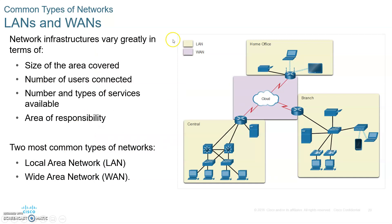A local area network (LAN) is where all the devices are connected to each other and you own the devices and the wiring. It could be a campus or a building. When you need to communicate with another branch somewhere else and you need to pay a service provider to connect to that other LAN, then you are going through a wide area network (WAN).